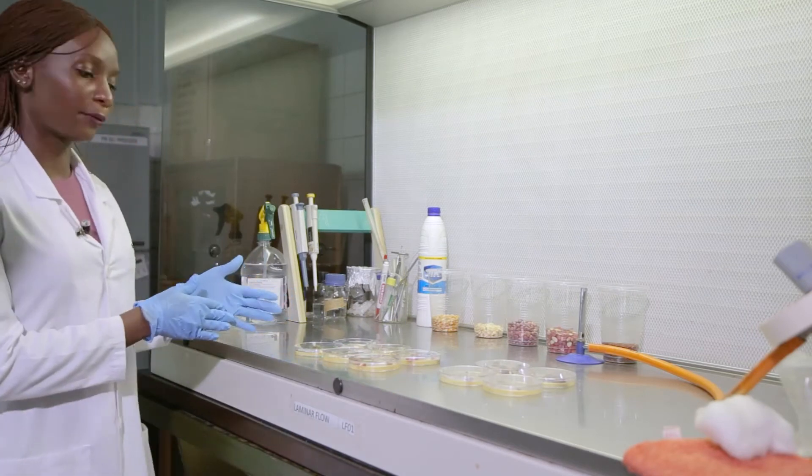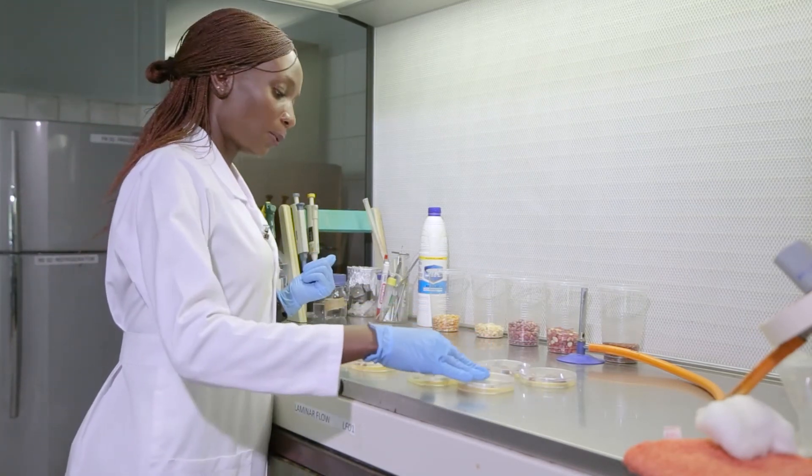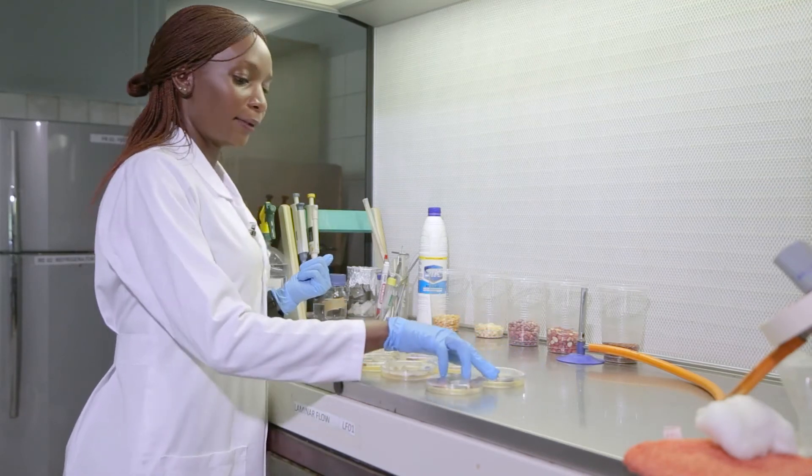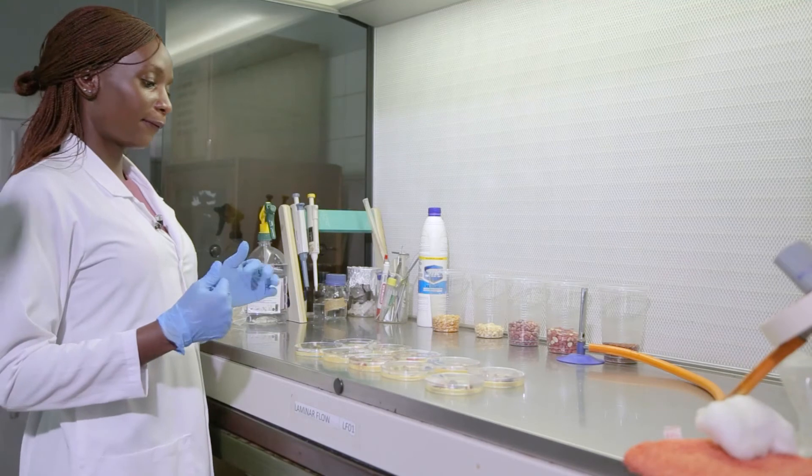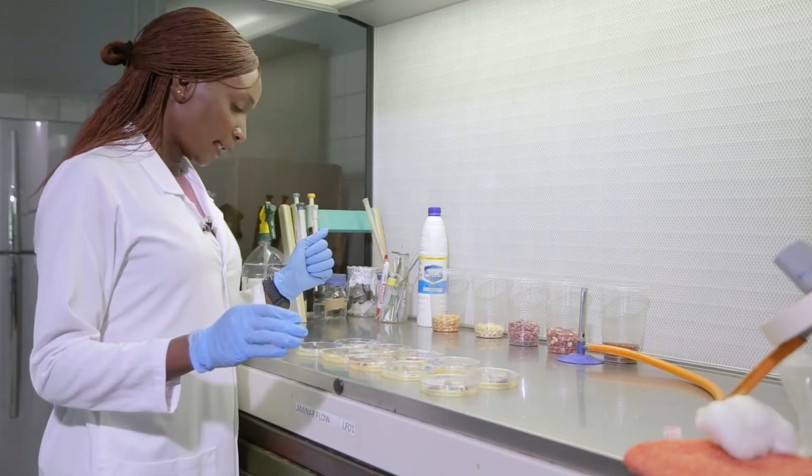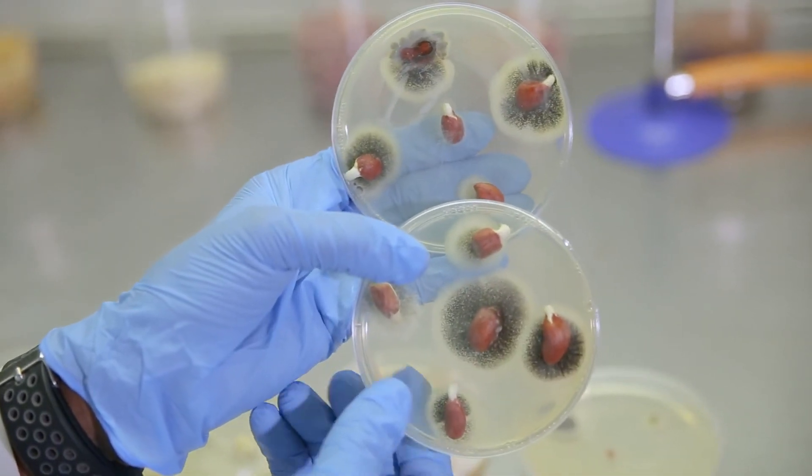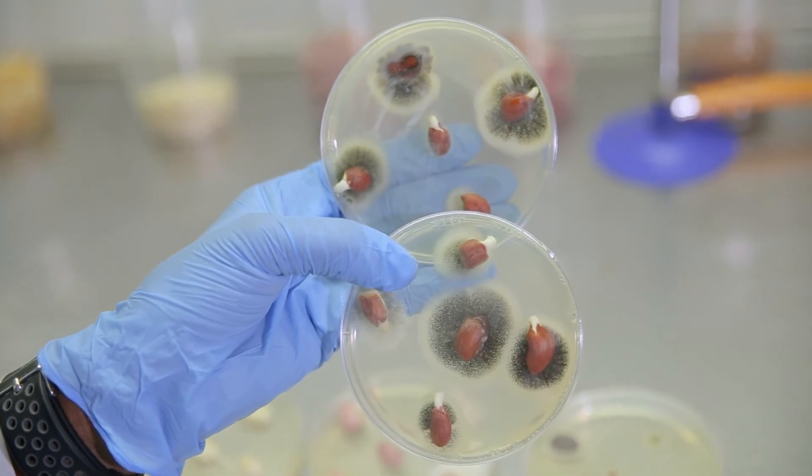You do the same for the rest of the plates or the grains that we have. What I also want to quickly point out here are the variety or diversity of molds that have manifested themselves on our plates. Dominant, I'm seeing this black mold, which is most likely Aspergillus niger. This is the black mold that we are seeing here.